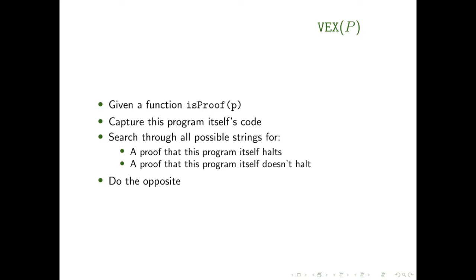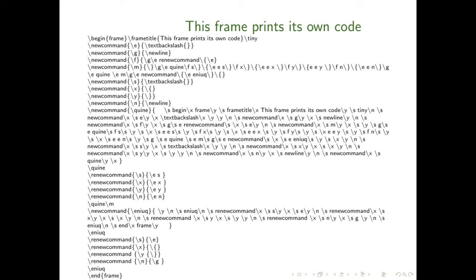We know for certain that VEX doesn't halt, but there also cannot be a proof within our proof system that VEX doesn't halt. A quine — a program that prints its own code — is a fairly fun exercise and there's a straightforward procedure for building one in any programming language. This presentation was written in LaTeX and uses this procedure to build a frame that prints out the code generating it.